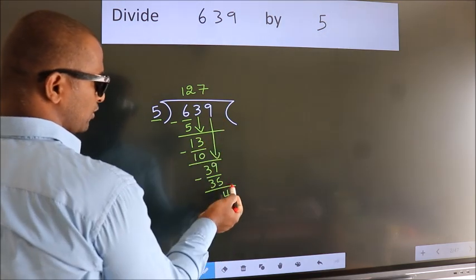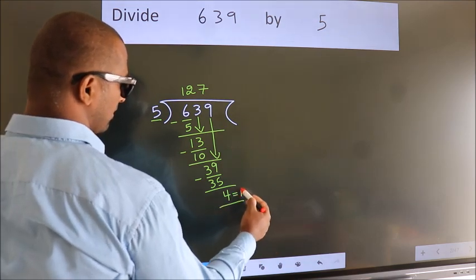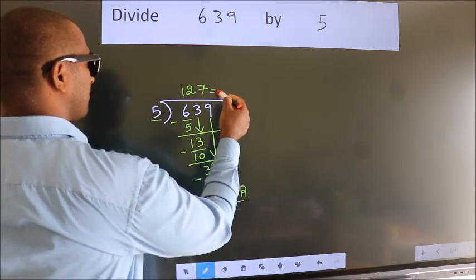No more numbers to bring it down. So we stop here. This is our remainder. This is our quotient.